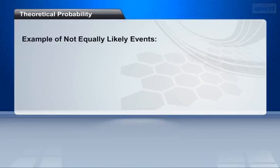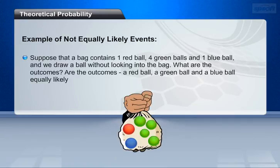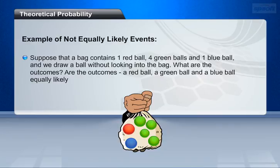Now let's discuss an example of not equally likely events. Suppose a bag contains 1 red ball, 4 green balls, and 1 blue ball, and we draw a ball without looking into the bag. Since there are 4 green balls, only 1 blue ball, and 1 red ball, we are more likely to get a green ball than a blue ball or a red ball. So the outcomes of getting a green ball, a red ball, or a blue ball are not equally likely events.